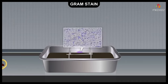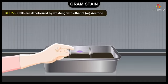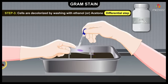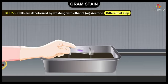The cells are then decolorized by washing with ethanol or acetone — this is the differential step. Gram positive bacteria retain the crystal violet, whereas Gram negative bacteria do not. The ethanol or acetone should be added dropwise with the slide tilted at an angle until the drop coming off the edge of the slide just starts to become colorless. Even Gram positive cells can lose the crystal violet-iodine complex during prolonged or excessive decolorization.